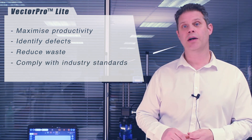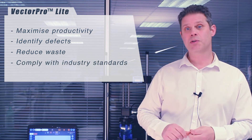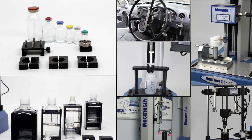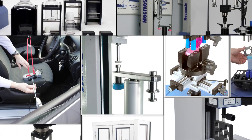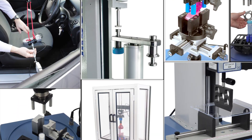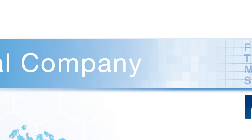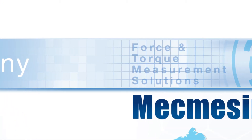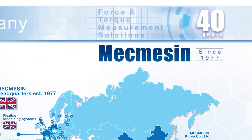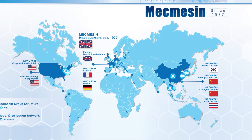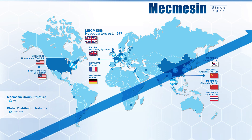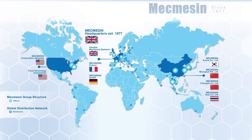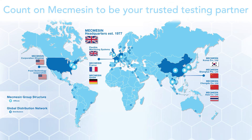In addition to our standard product range, our team of experienced application engineers can work with you to deliver custom designed products to your exact requirements. Mecmesin is headquartered in West Sussex, from where it has expanded globally. Subsidiary companies in France, Germany, the USA, China and Thailand are supported by a strong distribution network, and now operates in more than 50 countries.